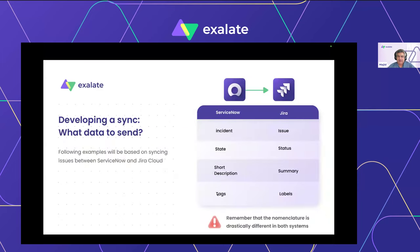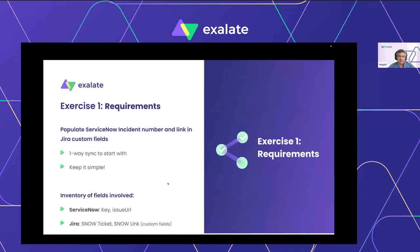Be aware that both systems are totally independent beasts that speak their own languages. Jira uses the word 'issue' to refer to tickets; ServiceNow uses 'incident'. Status is called 'status' in Jira but 'state' in ServiceNow — there are nuances to each system you should be aware of when configuring.